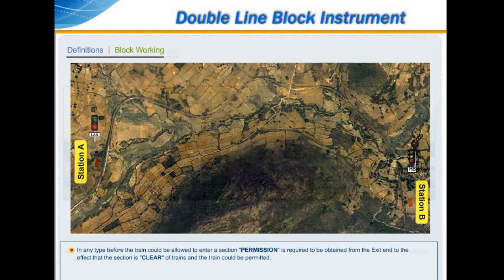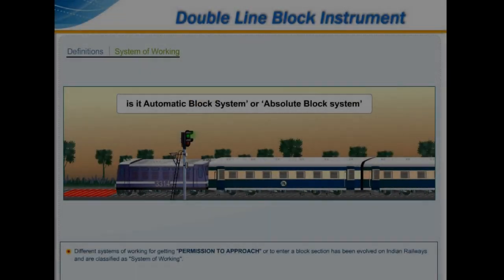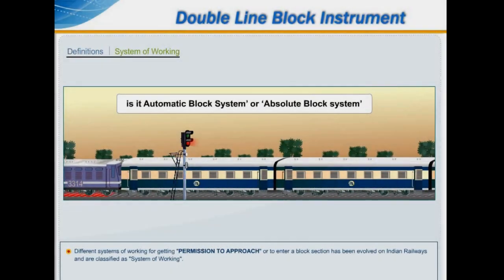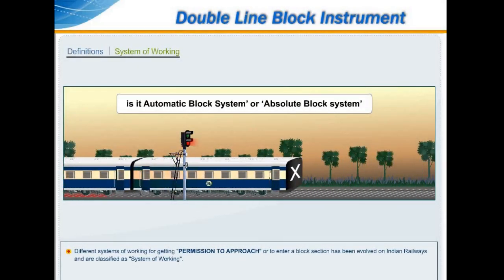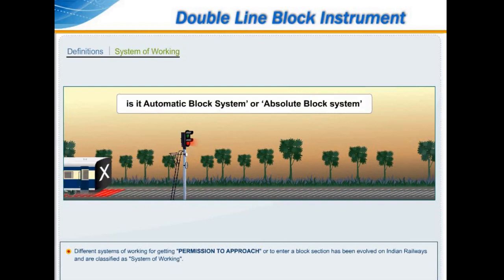Different systems of working for getting permission to approach or to enter a block section have been evolved on Indian Railways and are classified as systems of working. Absolute block system and automatic block system only shall be used in all Indian Railways, unless other systems are especially permitted by the Railway Board.